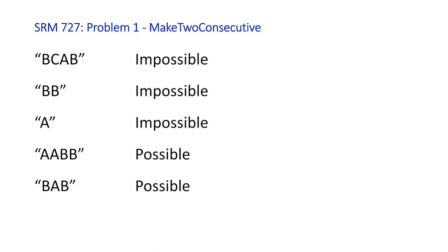The TopCoder site gave us a few examples. The first three — 'bcab', 'bb', and 'a' — will all return impossible because you have to remove at least one character. The second and third examples will have less than two characters after removal, so it's impossible to have two adjacent equal characters.